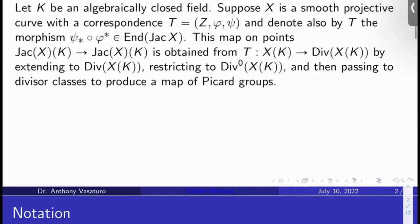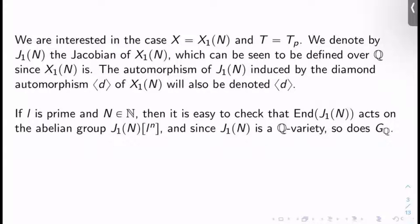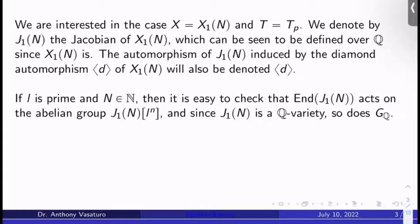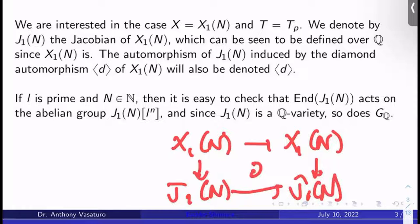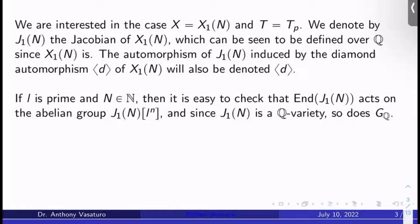I'm going to extend T to the divisor group of X(k) on the domain, restrict down to the degree zero divisors on the k-points of X, and then pass to divisor classes, which by definition produces a map of Picard groups — but the Jacobian is the Picard group. So that's how you get this map. Some notation next: we're specifically interested in the case where X is the modular curve X₁(N) and T is the Hecke correspondence T_p. I'll denote by J₁(N) the Jacobian of X₁(N). This is defined over ℚ, basically because X₁(N) is. Also remember I have these diamond automorphisms of X₁(N), denoted ⟨d⟩. Those will induce automorphisms on J₁(N), because you have an automorphism from X₁(N) to itself, and this diagram commutes. So this is always how things that happen on the level of curves will generally extend to the Jacobians. Those extensions to J₁(N) I'll also call ⟨d⟩.